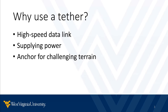But why use a tethered robot as opposed to a freely moving one? Well, there could be several advantages. First of all, the tether can serve as a high-speed data connection link in scenarios where wireless communication might not be feasible. The tether could also be used to deliver power to the robot, allowing for much longer mission times than on battery power alone. There may also be a physical advantage to the tether, namely using it as an anchor for otherwise impossible terrains, like a side of a very steep hill or a crater.